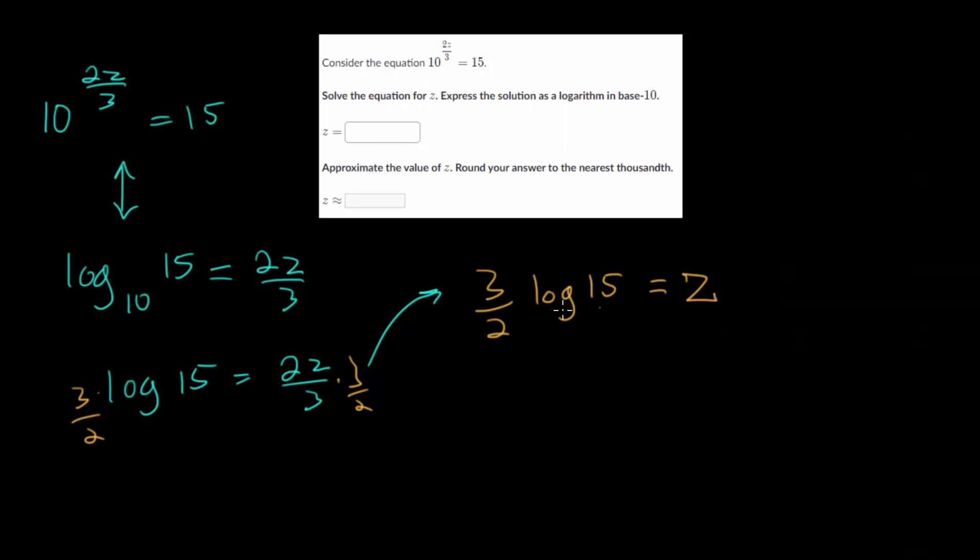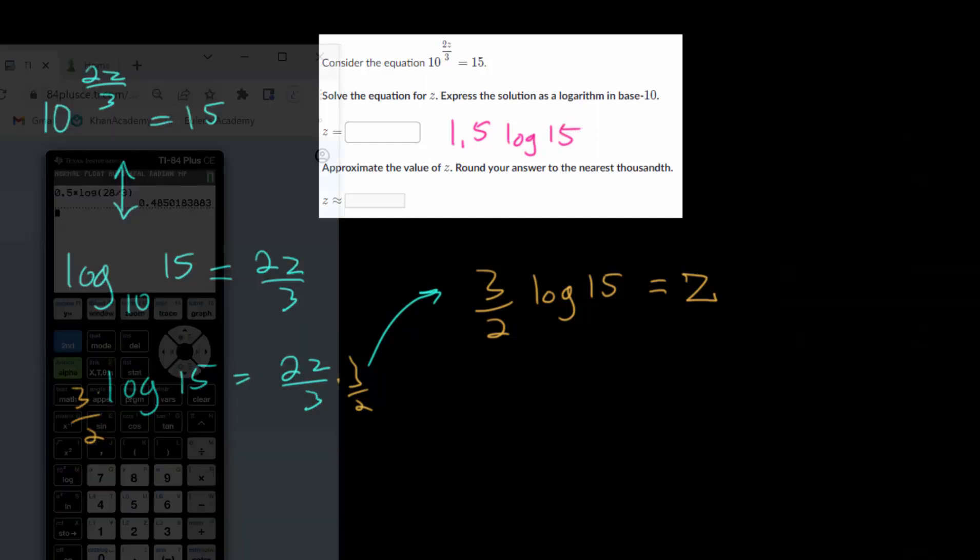So we get that 3 halves times log of 15 is equal to z. And at this point, we can just put this into the calculator, though this is actually the solution for the first part. So 3 halves is really just 1.5.